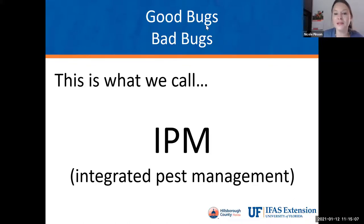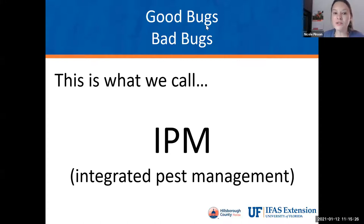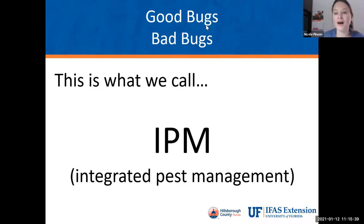We're never going to get rid of all bugs, so trying to achieve 100% elimination is unrealistic and can actually contribute to resistance in insects. There are things called thresholds. If you pull up a section of turf grass and see a few grubs in the soil, that's no big deal — you don't need to treat. But if you have many grubs, at a high threshold or infestation level, then that's when you want to put down a method for control.